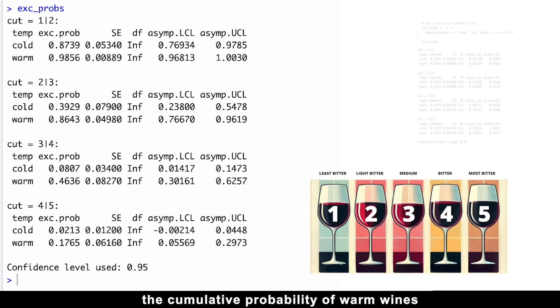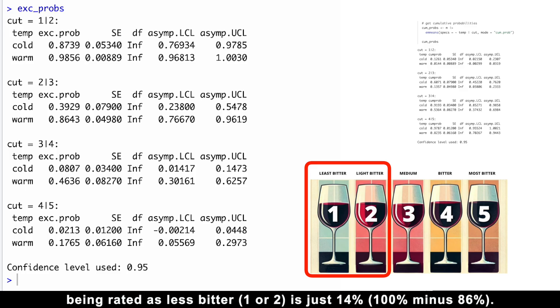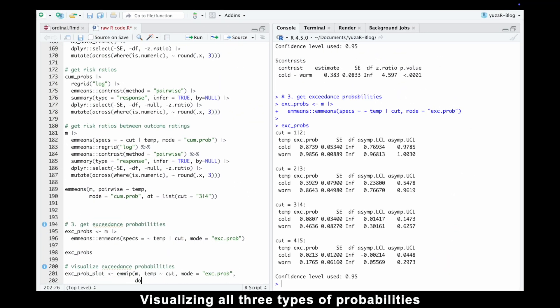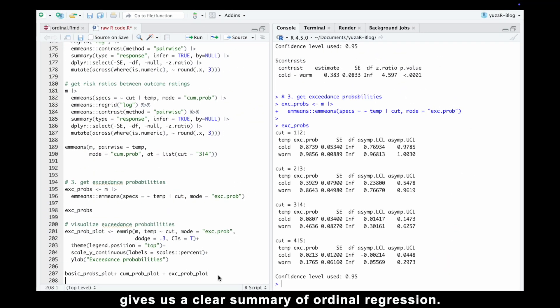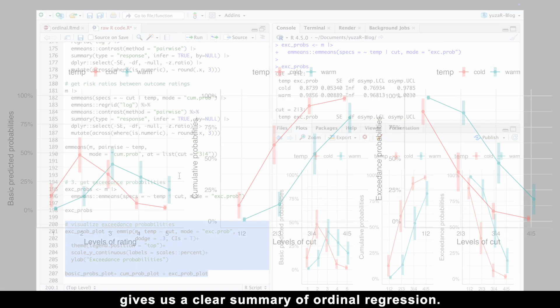Correspondingly, the cumulative probability of warm wines being rated as less bitter, namely, ratings 1 or 2, is just 14%. Visualizing all three types of probabilities gives us a clear summary of ordinal regression.